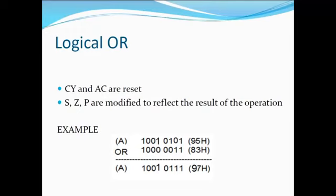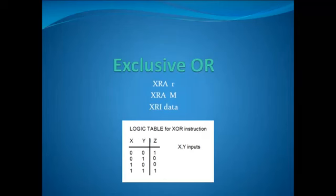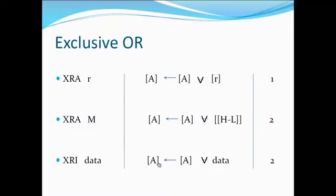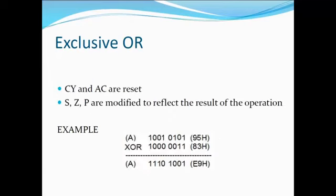In XOR, it gives output 1 when both inputs are the same, and when inputs are different it gives 0. It is of three types: XRAR, XRAM, and XRI data, which perform operations on register, memory, and data respectively. In these, the carry flag and auxiliary carry are reset, and all other flags are modified to reflect the result of the operation.